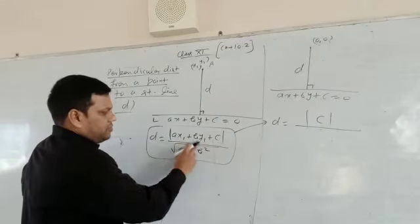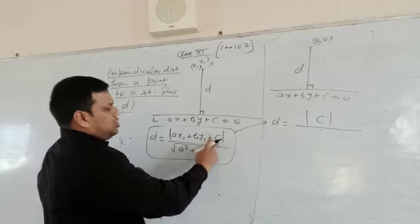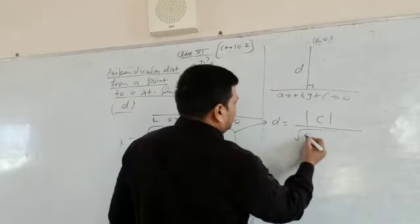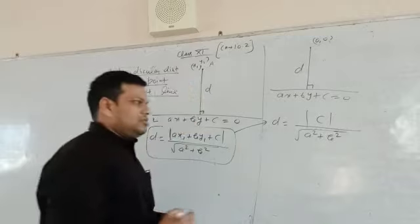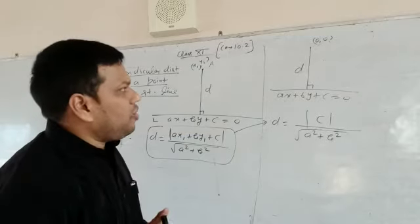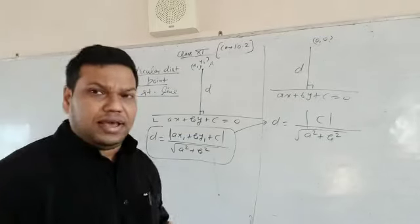Only c will remain. It will be 0 and 0, so modulus c upon root a square plus b square. So this is the formula from origin to any line.